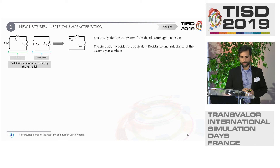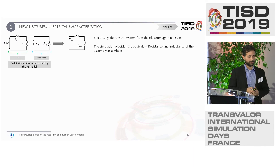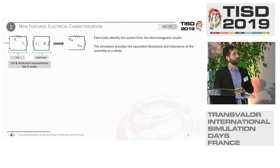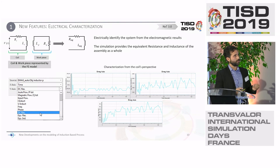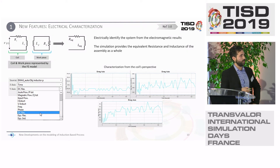We have worked on refactoring and modifying the outputs from the electromagnetic solver in order to simplify the use of all the results. One that can be really interesting is to electrically characterize the system, because sometimes for fast computation or calculation of the energy consumption, it is a good approach to have an electrical representation of the whole system. From the typical outputs — the VTA files with global results — you will find the DC electric resistance of the inductor, and a representation of equivalent resistance and inductance of the whole system seen from the inductor point of view.